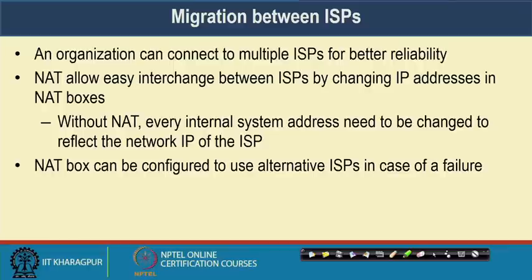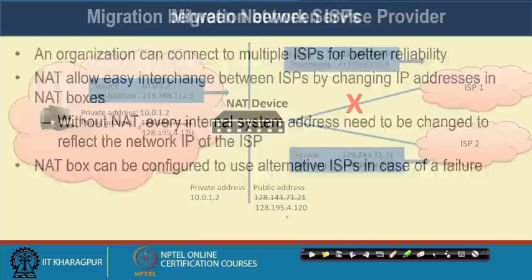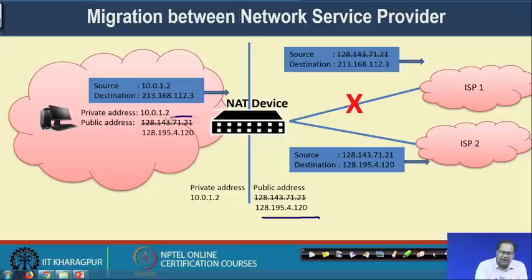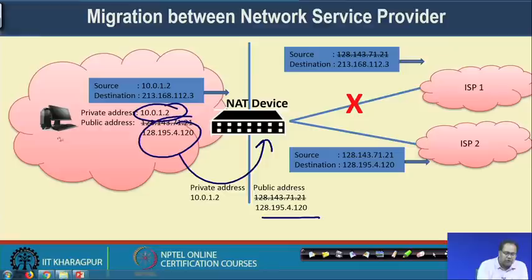Without NAT, every internal system address would need to be changed to reflect the network IP of the new ISP, but with NAT, the NAT box takes care of that. For example, initially the NAT device was connected to ISP 1, giving addresses from a pool of 128.143.71.21. The moment ISP 1 fails and the NAT device connects to ISP 2, it starts giving addresses from a different pool, say 128.195.4.128. Only the public address changes, managed by the NAT device. The private IP 10.0.1.2 assigned to the internal machine remains as it is — you do not need to reconfigure every machine independently.